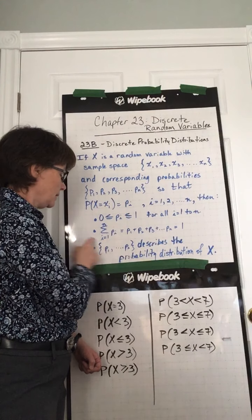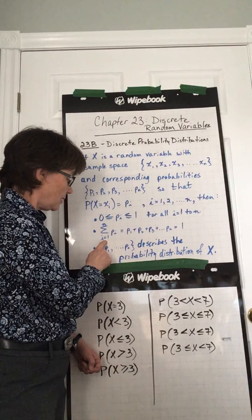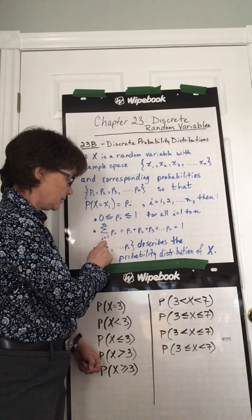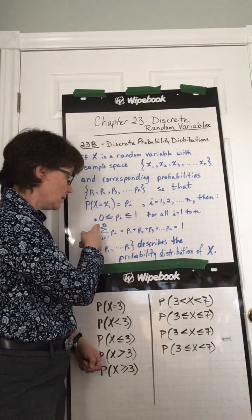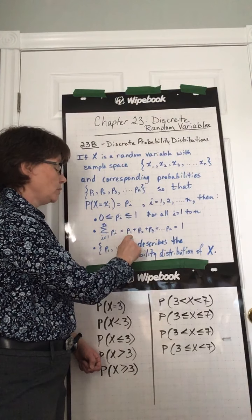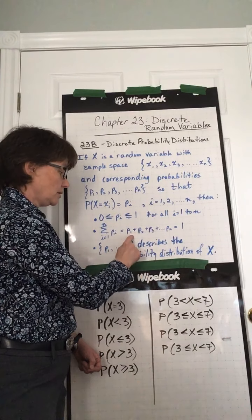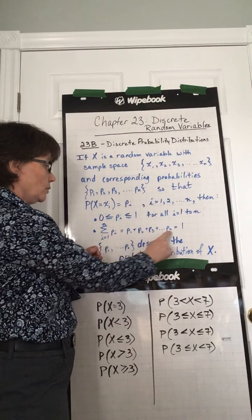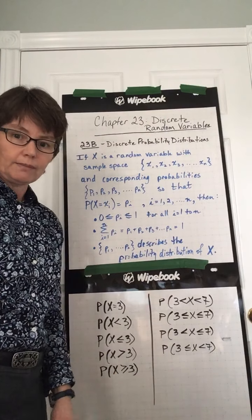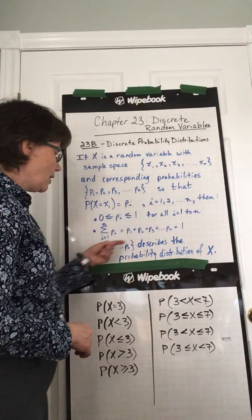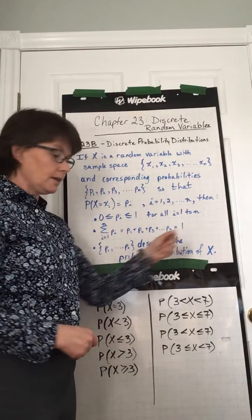Next point. Remember this notation. The sum of all pi's, starting when i is equal to 1 and ending when i is equal to n, is equal to P1 plus P2 plus P3, all the way up to Pn. So we started at 1, like it says here. We ended at Pn, like it says here. It has to equal 1. In other words, like we've said before, the second rule, all of the probabilities added up together have to equal 1.